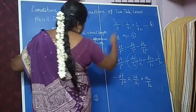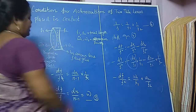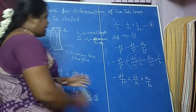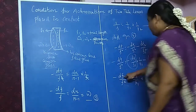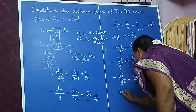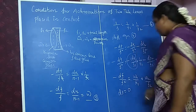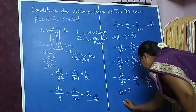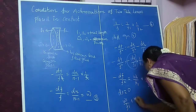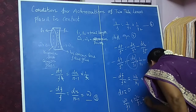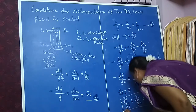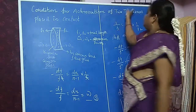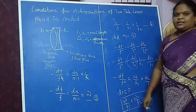For the achromatic combination, the change in focal length dF equals zero, which eliminates chromatic aberration. Therefore, the condition for achromatism of two thin lenses placed in contact is: omega1/F1 + omega2/F2 = 0. Thank you.